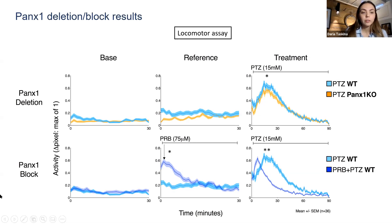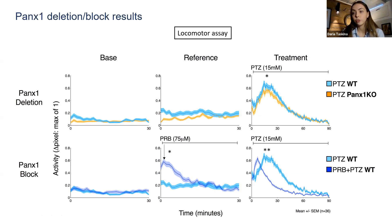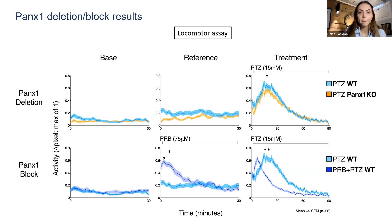For the Pannexin-1 pharmacological block model, the dark blue line represents wild type pre-incubated with Probenecid. At baseline, both wild types are indistinguishable. When pre-incubated with Probenecid, there's a spike in activity — they do react to the drug — but then that activity goes down to baseline. Once PTZ is added, those pre-incubated with Probenecid don't show the same spike in activity; their activity goes down quite immediately.